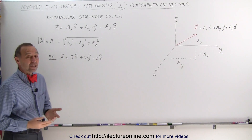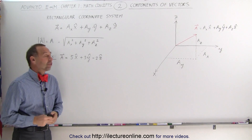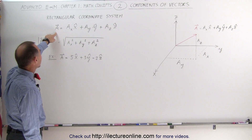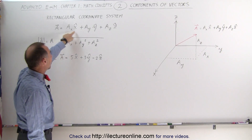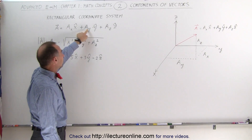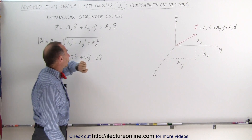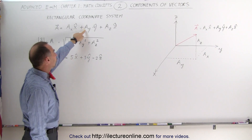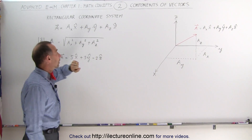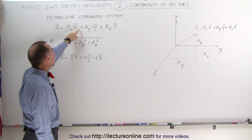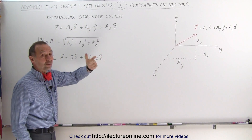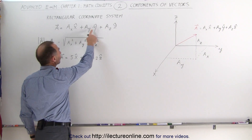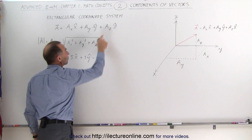Let's do an example in the rectangular coordinate system. If we're going to write a vector, that vector will have an x component, a y component, and a z component. These are the magnitudes of the x, y, and z components, and the sign indicates the direction relative to the x-axis, the y-axis, and the z-axis.